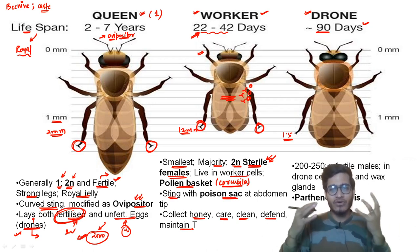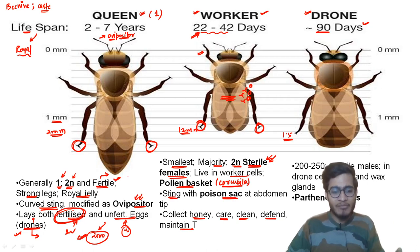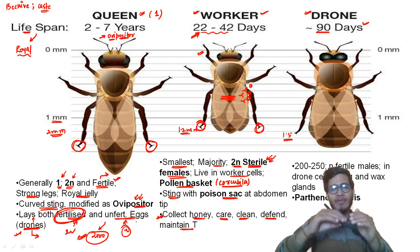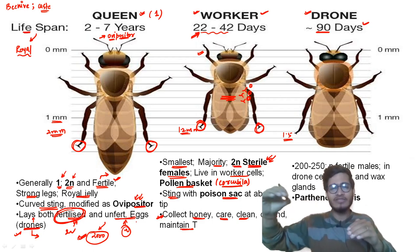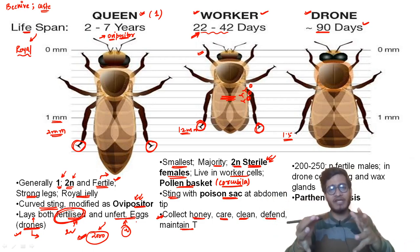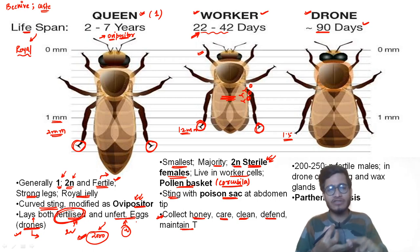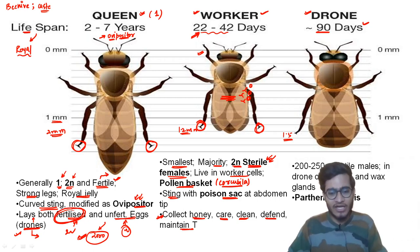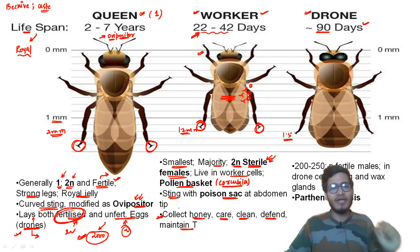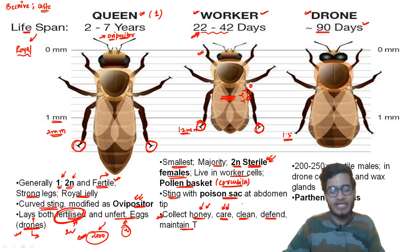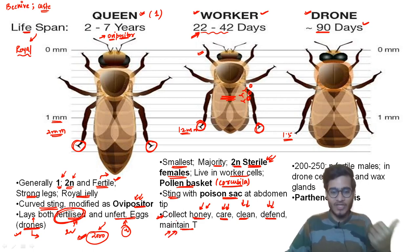Workers also maintain the temperature of the beehive so that optimum honey production can occur and an optimum environment for the young ones, drones, and queen can be maintained. Their roles in the caste distribution include: honey collection, care of young ones, cleanliness, defense, and temperature management.